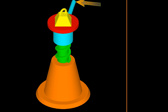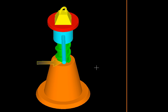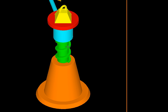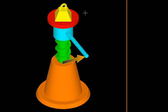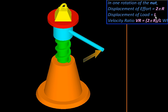You can see the effort is getting displaced around a circle, so its displacement will be 2πr if r is the radius of that circle. And the distance moved by the load in each rotation is called L, the lead.